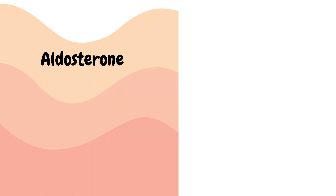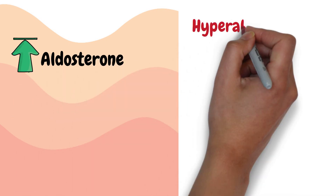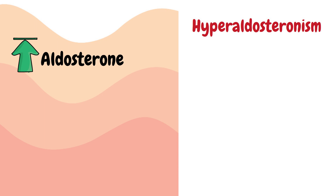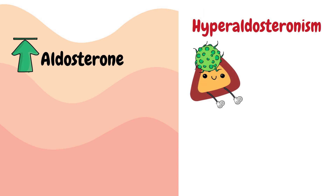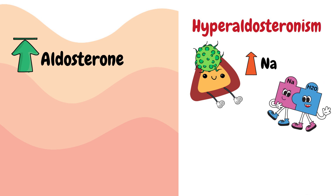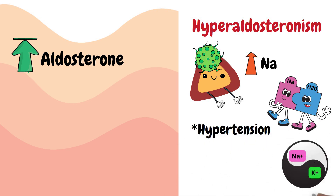Imbalances in hormones produced by your adrenal glands can lead to various diseases. An overproduction of aldosterone can lead to a condition called hyperaldosteronism, which can be caused by a tumour in the adrenal gland. The excessive aldosterone absorbs lots of sodium into your blood — wherever sodium goes, water follows — leading to hypertension. Potassium is the yang to sodium's yin, so when sodium goes up, potassium will go down, giving these patients a low serum potassium. Hypertension and low potassium is indicative of hyperaldosteronism.